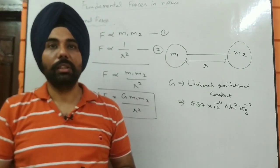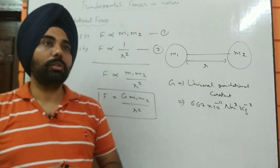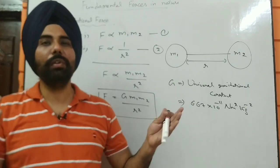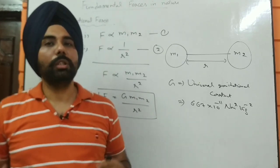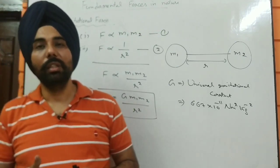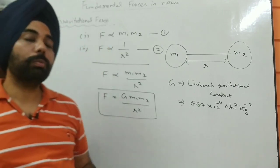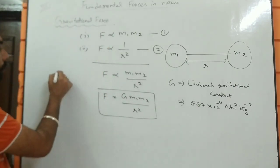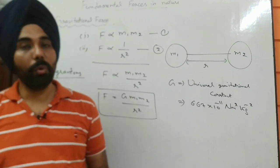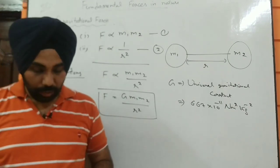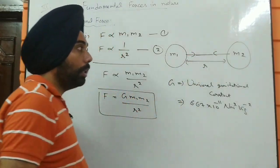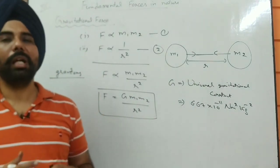The fourth property is that it is a conservative force, meaning it does not depend upon the path followed. Additionally, in every fundamental force there is an exchange of particles — in the case of gravitational force, those exchanged particles are known as gravitons. It is also a central force, meaning the force always acts along the line joining the centers of the two bodies.